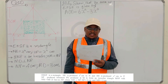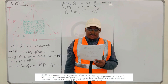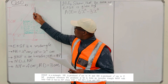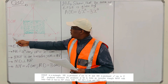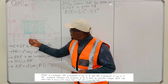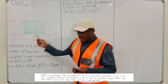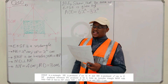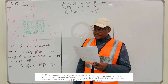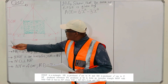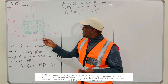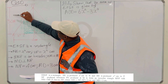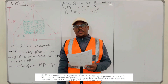They are saying D lies on NP, where MD is perpendicular to NP. So D lies on the base of the isosceles triangle MNP. MD, which is the vertical line, is perpendicular to NP. They also tell us that the length of NP — the entire base of the isosceles triangle — is 4 centimetres, and the height MD is 3 centimetres.